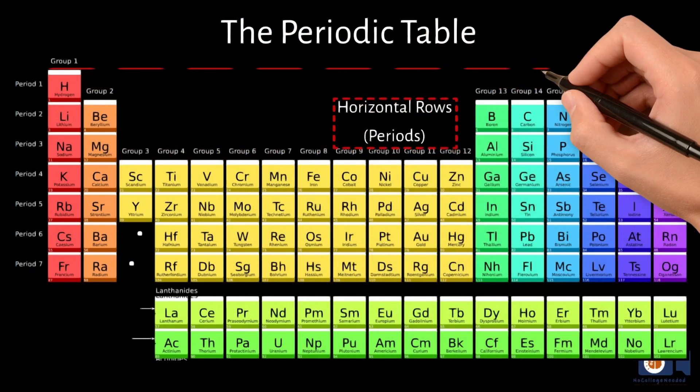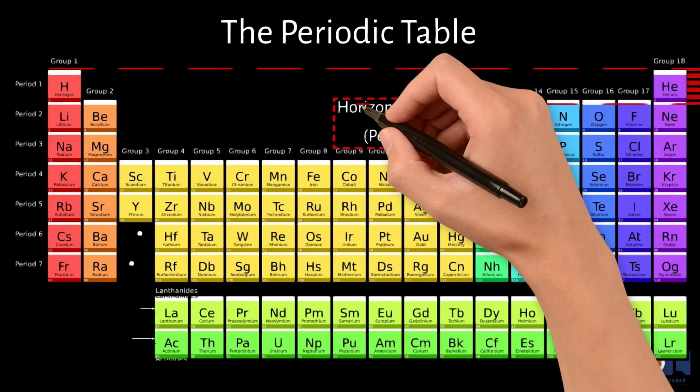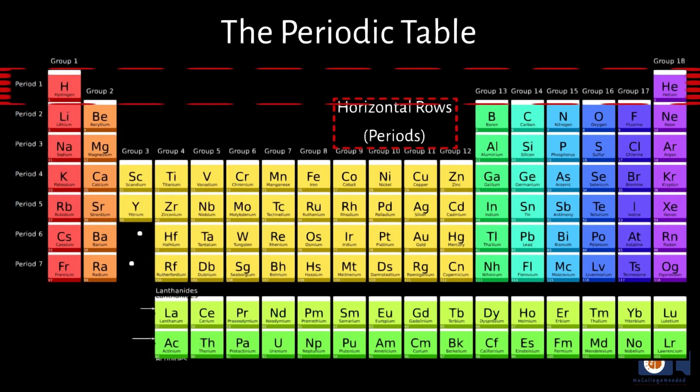The first period or row only contains two elements, hydrogen (H) and helium (He). This first row only has one electron shell, which we will go into more depth in future units.